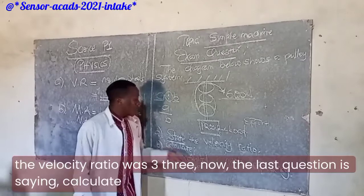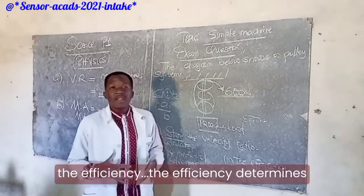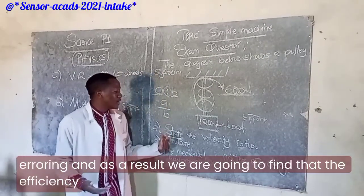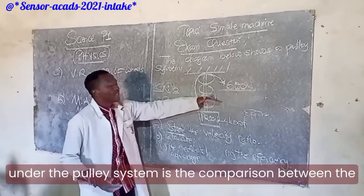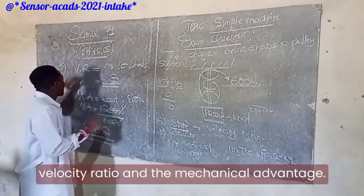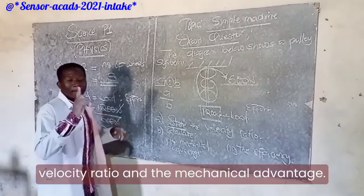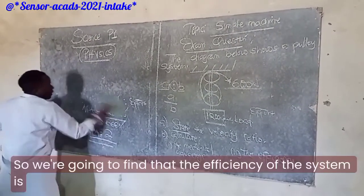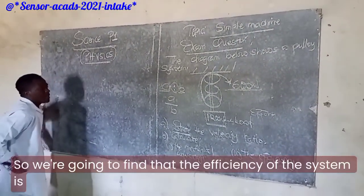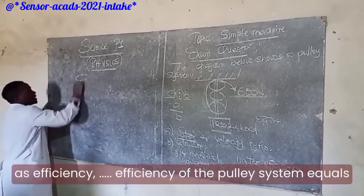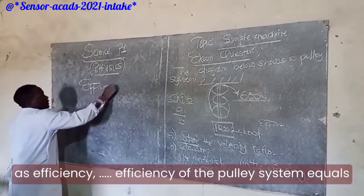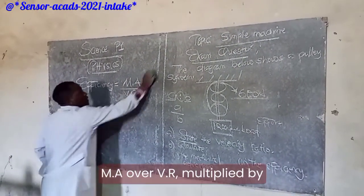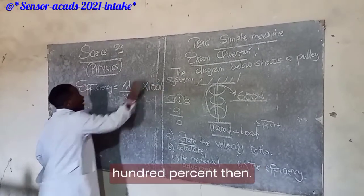The last question says: calculate the efficiency. The efficiency determines the accuracy of how best a machine can operate without error. The efficiency of a pulley system is the comparison between the mechanical advantage and the velocity ratio, and the answer is expressed as a percentage. The formula is: Efficiency = (Mechanical Advantage ÷ Velocity Ratio) × 100%.